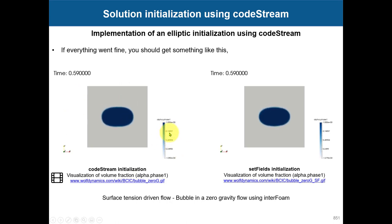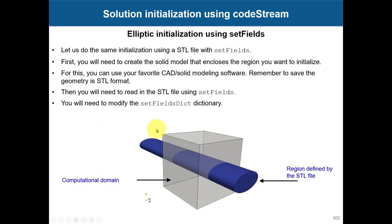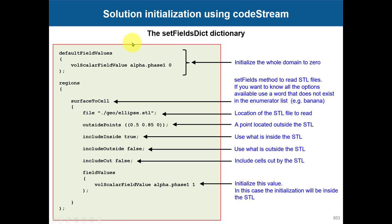If you let it run, this is what you're going to get. Now if you want to do the same using setFields with an STL file — you can use an STL as a geometrical entity in setFields. You generate the STL using your favorite CAD tool and basically put your STL in and then initialize from it.